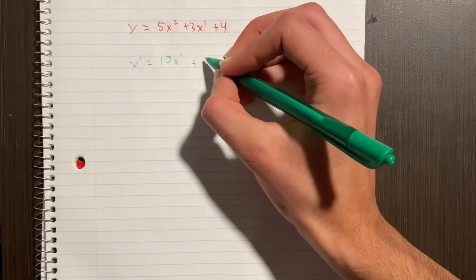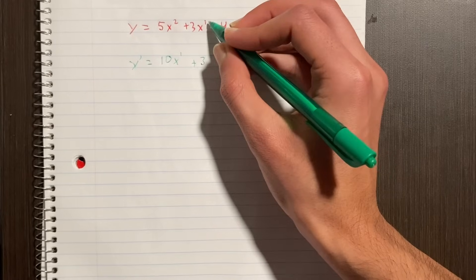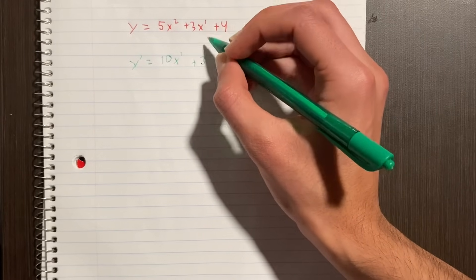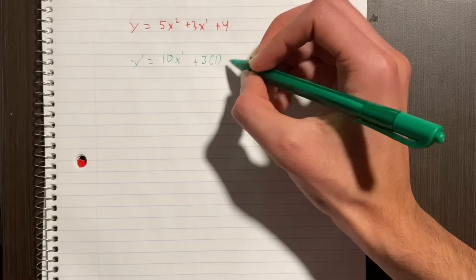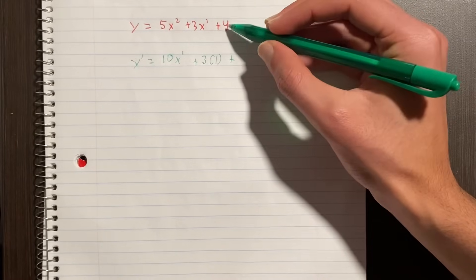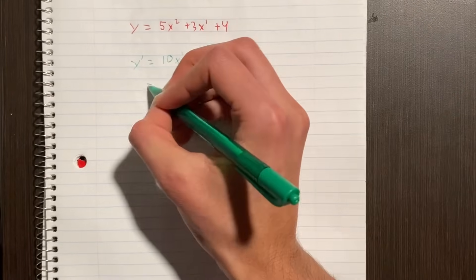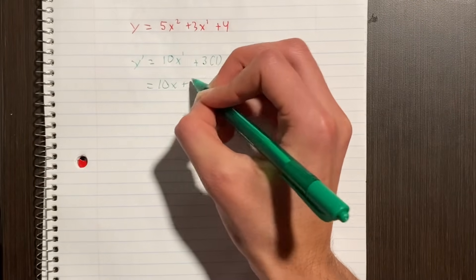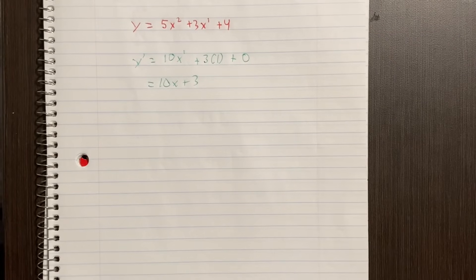Plus you do the same here, so that's 3, and 1 minus 1 is 0. And anything to the 0th power becomes 1. The derivative of a constant becomes 0, so you're left with 10x plus 3. So that's literally half a semester of calculus.